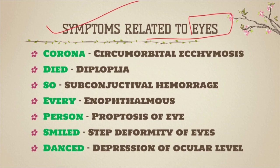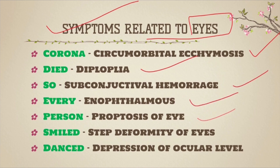So let's see the first part — symptoms related to the eyes specifically. C for circumorbital ecchymosis, D for diplopia, S for subconjunctival hemorrhage, E for enophthalmos, P for proptosis of the eye, S for step deformity of the eye, and D for depression of the ocular level. That was the first part.